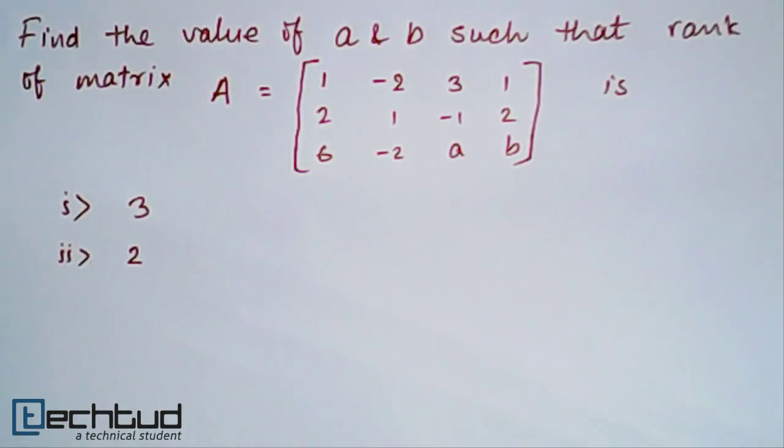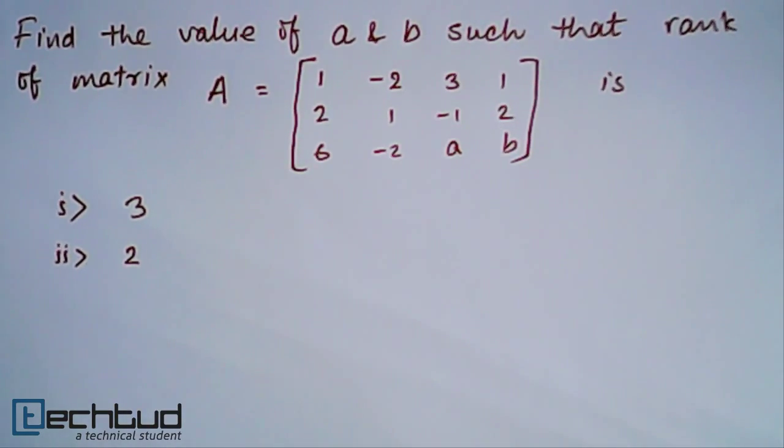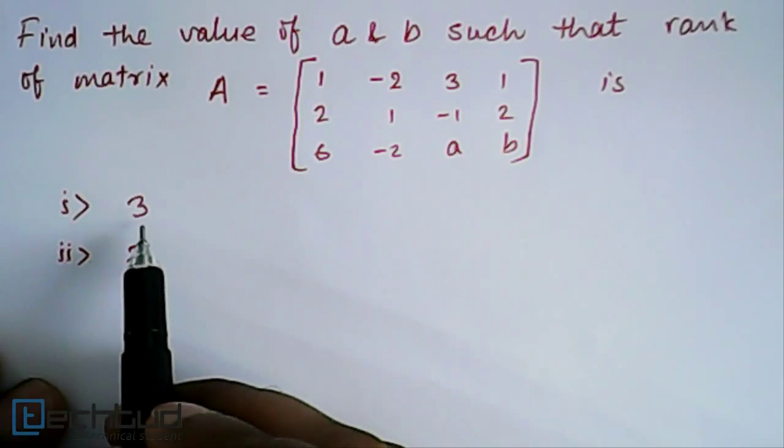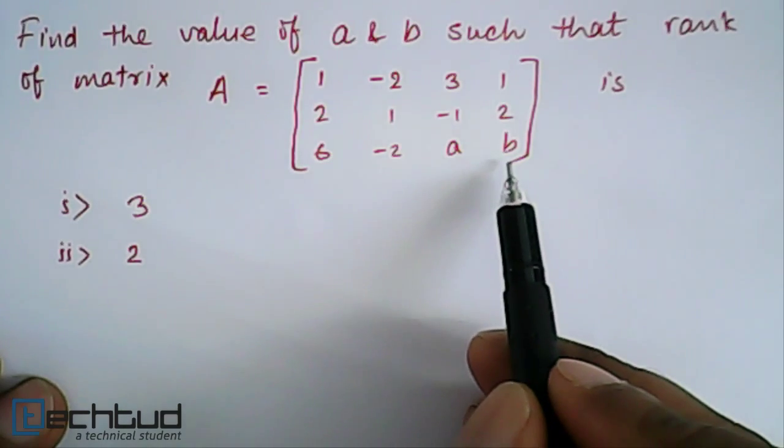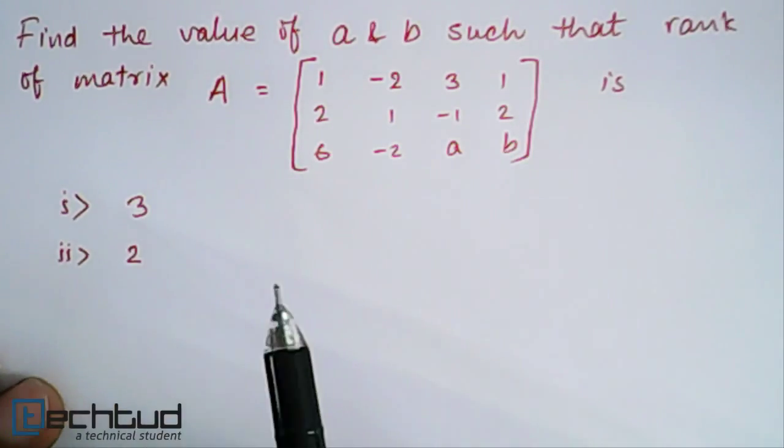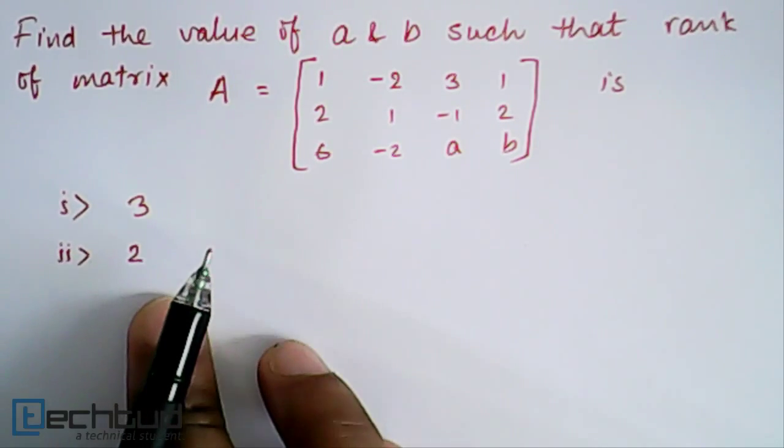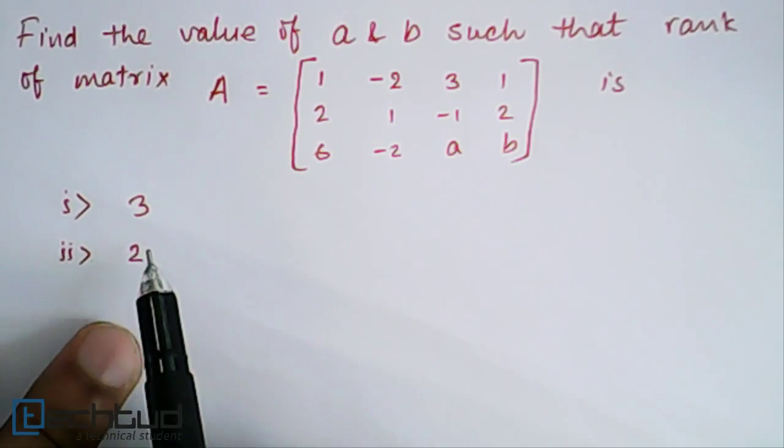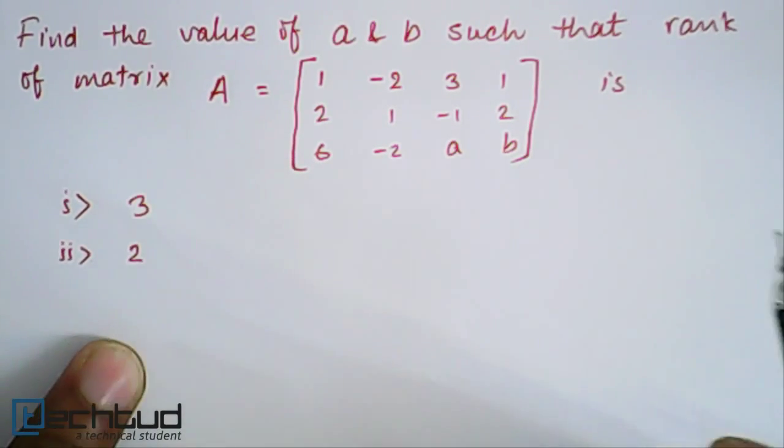Hello everyone, welcome to Techbud.com. In this problem, we have given a matrix and it is saying for the matrix to have rank 2, what should be the value of a and b, or for the matrix to have rank 3. These are two sub-problems. So, the matrix to have these values of rank, what should be the value of a and b.